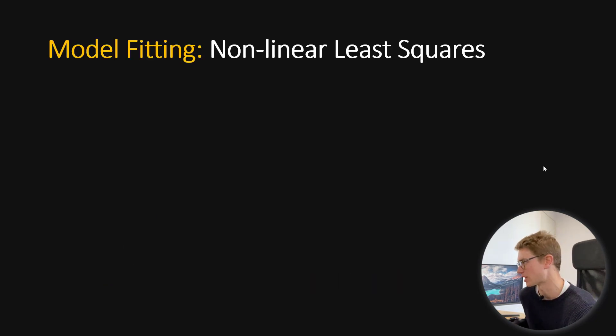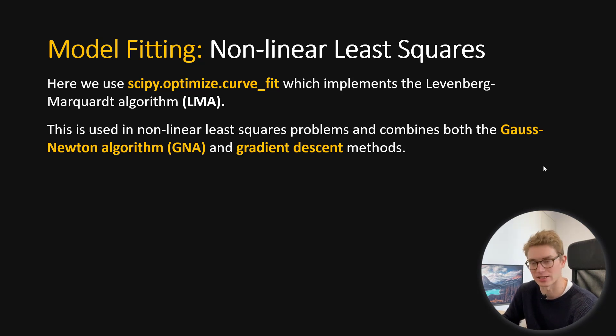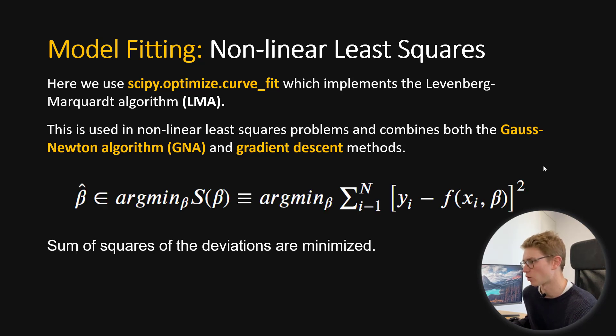Model fitting by nonlinear least squares. Here, we're actually going to be using sci-pi-optimized curve fit, which is an implementation of the Levenberg-Marquardt theorem, so LMA theorem. Essentially, this is just a nonlinear least squares problem and solution that combines both the Gaussian-Newton algorithm, so GMA, with gradient descent. We won't get into the details, but all we're doing is we're trying to minimize the sum of the square deviations and the sum of the square deviations are actually calculated by using those two algorithms before.